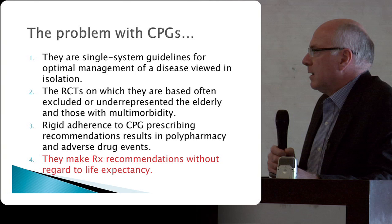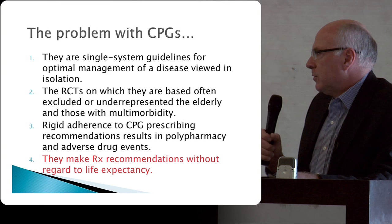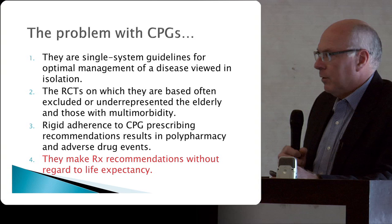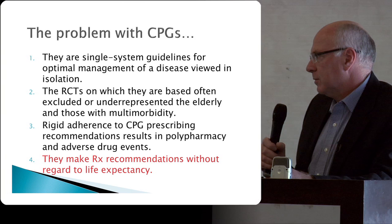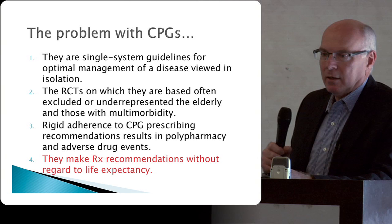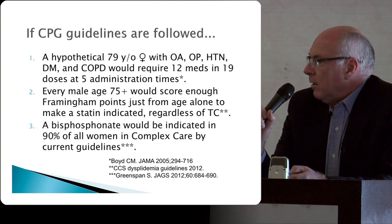Some of the problems with clinical practice guidelines are that they are single-system guidelines for the optimal management of a disease viewed in isolation; that randomized controlled trials on which they are based often excluded or underrepresented the elderly and those with multi-morbidity; that rigid adherence to CPG prescribing recommendations results in polypharmacy with attendant adverse drug reactions; and in particular, they make treatment recommendations without regard to life expectancy.